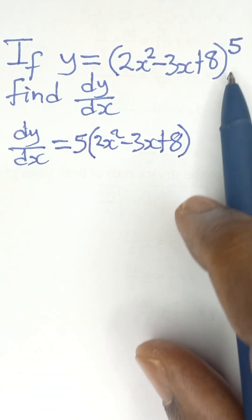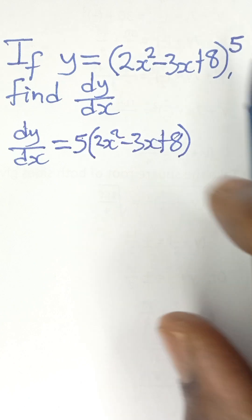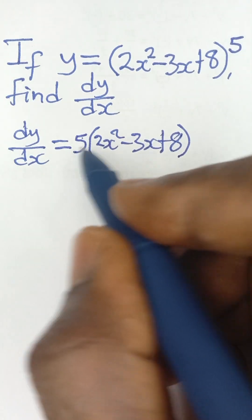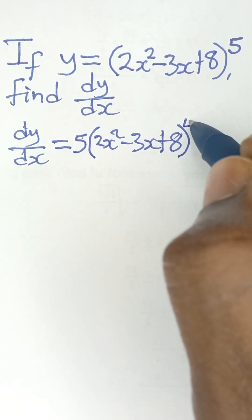And then you subtract 1 from the power of 5. After you have used the 5 to multiply this, you subtract 1 from this power, it becomes 4.